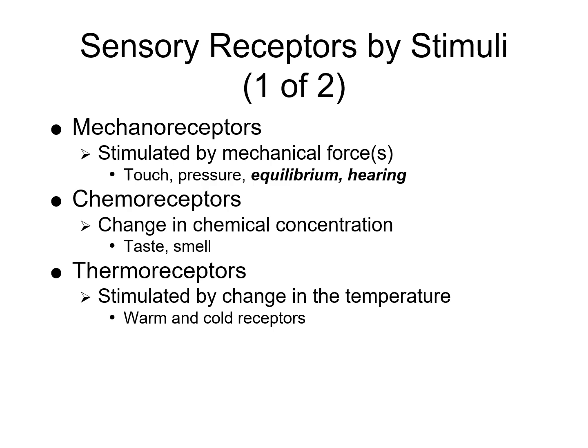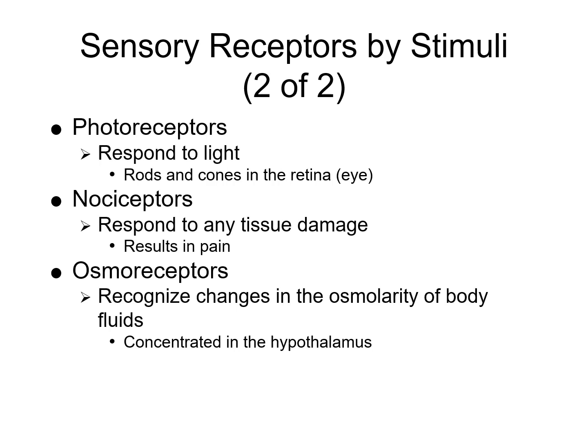Sensory receptors are also classified by their stimuli. Mechanoreceptors are stimulated by some mechanical force like touch, pressure, equilibrium, or hearing. Chemoreceptors are activated by a change in the concentration of a chemical, taste, or smell. Thermoreceptors are stimulated by a change in temperature — these are your warm and cold receptors. Photoreceptors respond to light stimuli. Nociceptors respond to any tissue damage and produce the sensation of pain. Osmoreceptors are specialized receptors concentrated in the hypothalamus that help us recognize changes in osmotic pressure within body fluids.